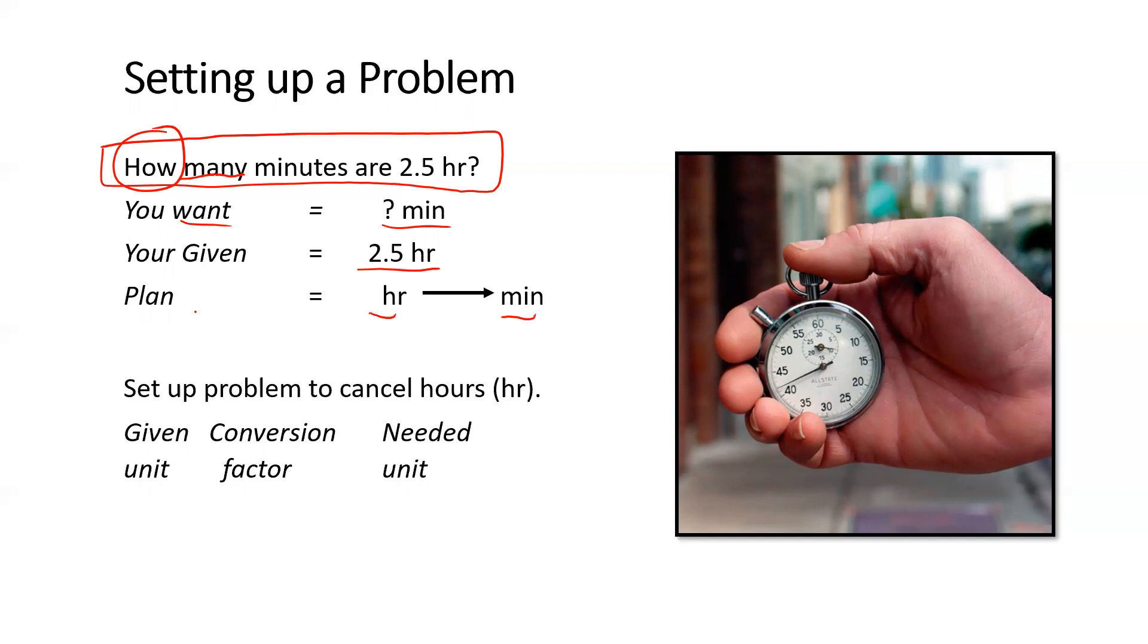If you think about it, what could you use? Well, I know in one hour there's 60 minutes. The way I wrote this, it's not going to help me cancel out this unit of hour, so I'm going to have to flip this conversion factor to make sure that the units cancel correctly. So I would start with the 2.5 hours - this is why I call it railroad tracks. I'm going to put hours on the bottom - one hour is 60 minutes. The hours cancel, I'm left with the units of minute, which is what I'm looking for. Grab my calculator, do 2.5 times 60, and I'll get my answer.